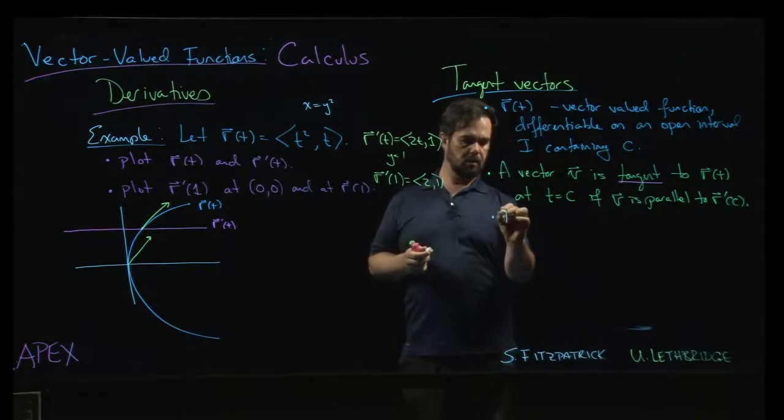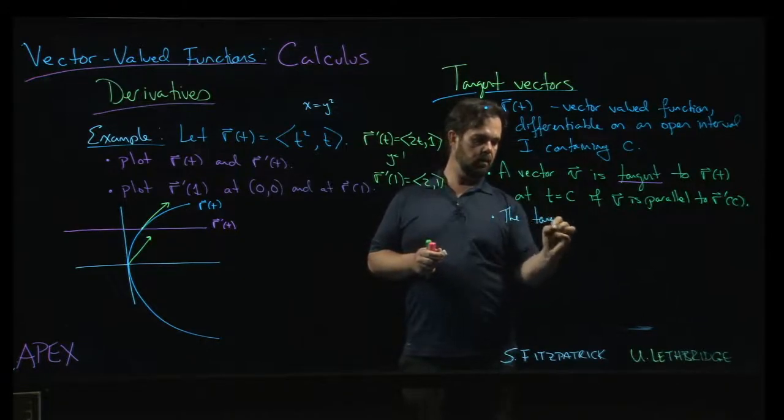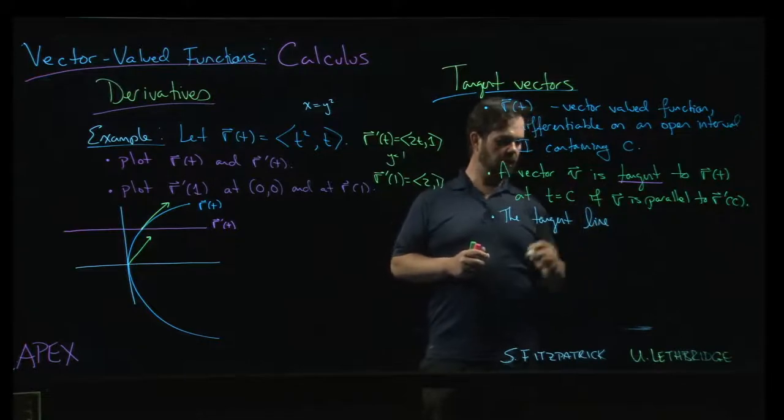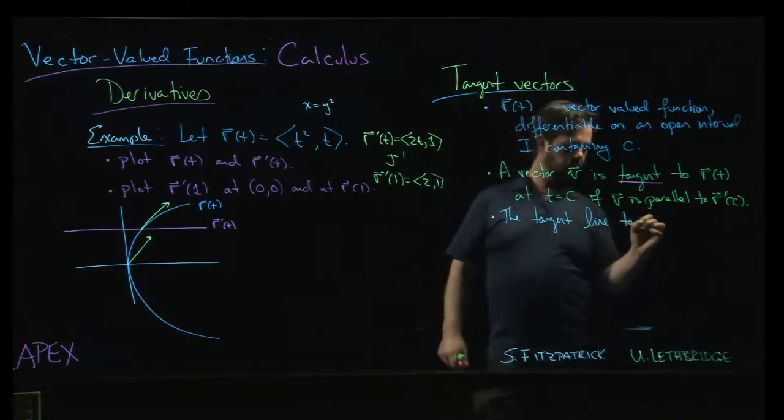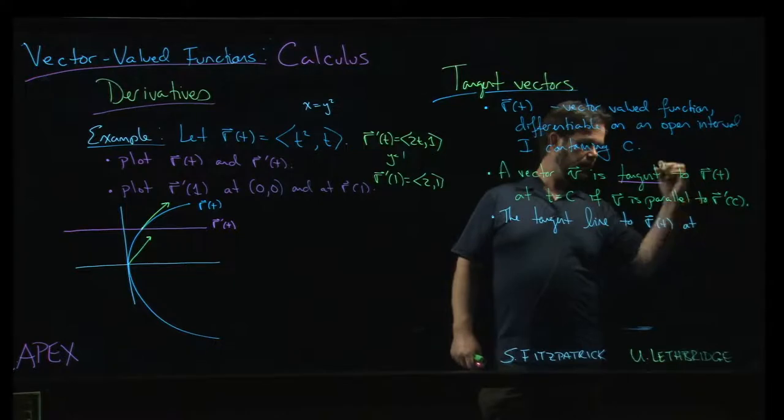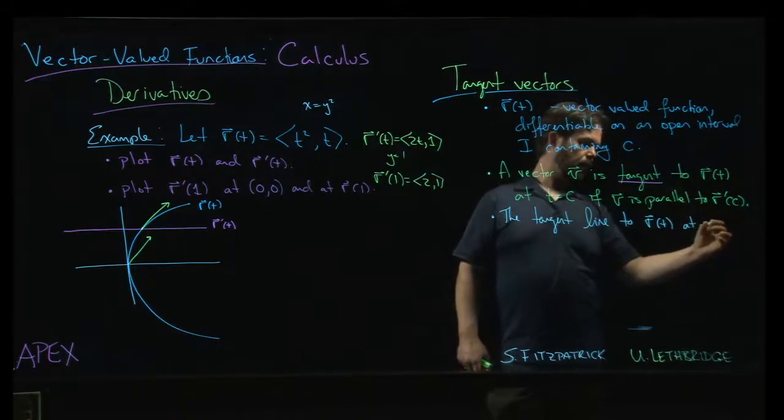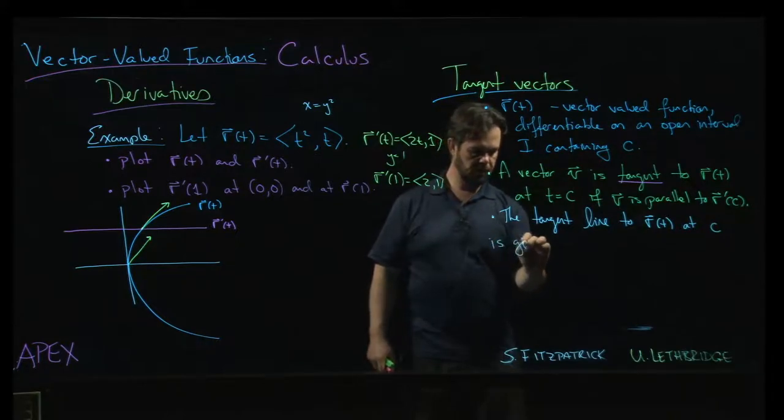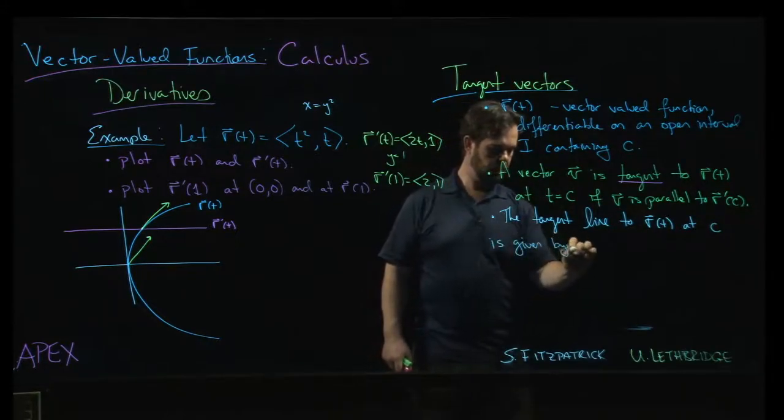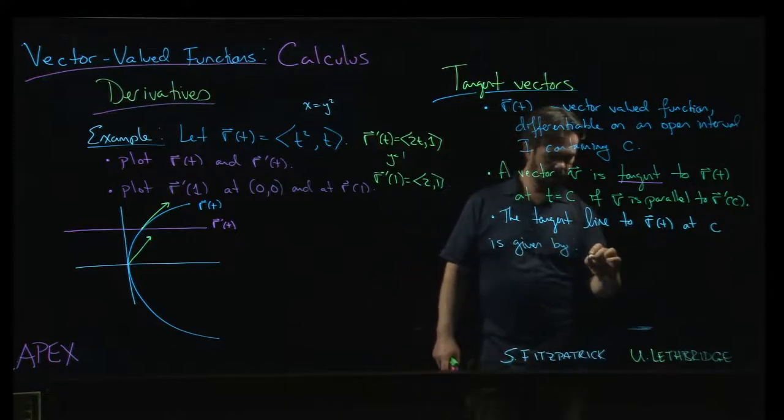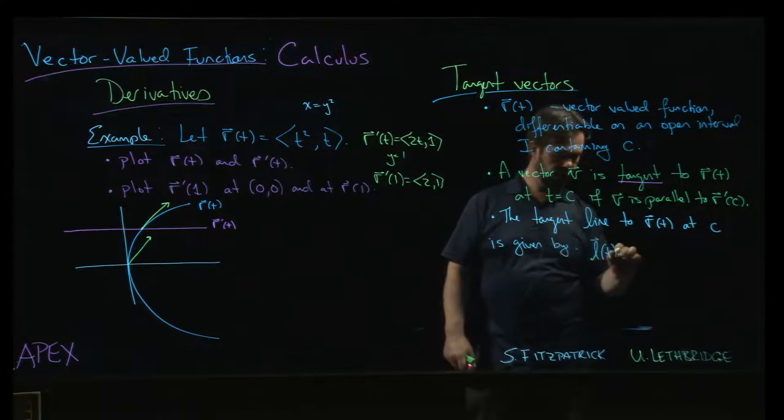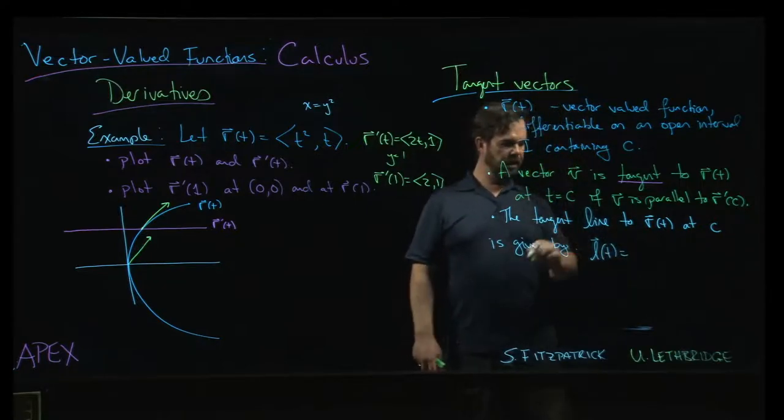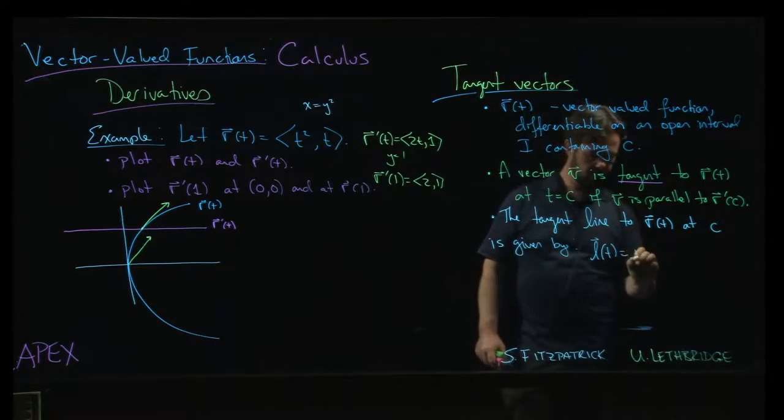And so then the tangent line to the graph of r(t) at c is going to be given by l(t). Think of this as a vector-valued function now, right? Parametric equation for a line.